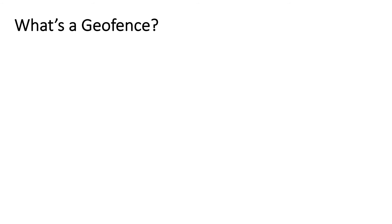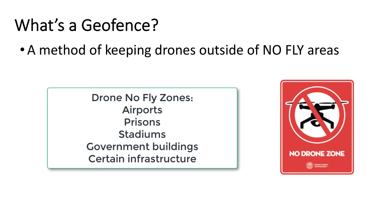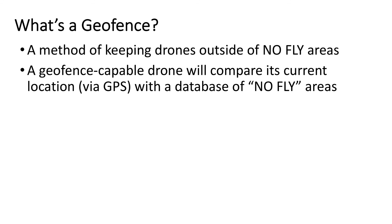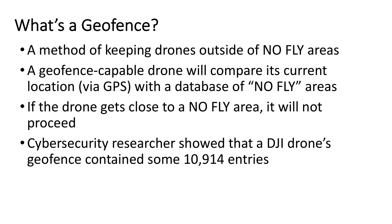Another type of attack is attacking geofences. What's a geofence? A geofence is a method of keeping drones outside of no-fly areas. If you go on YouTube and search for drones flying around airports, you'll see a lot of them — airports are the number one no-fly area for drones. They're also not supposed to fly around stadiums or prisons. The geofence is meant to keep the drone from flying around those areas. A geofence-capable drone will compare its current GPS location with a database of no-fly areas, and if the drone gets close to one, it will not proceed — just as if there were an actual physical fence there.